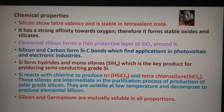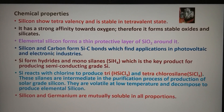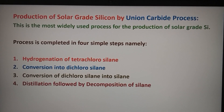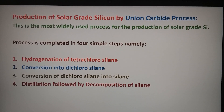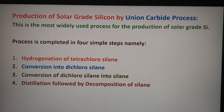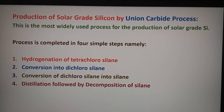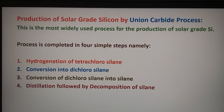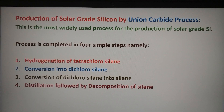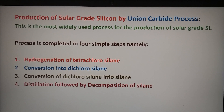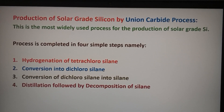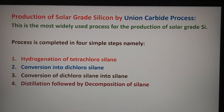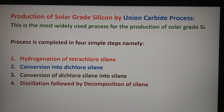There are many processes for the production of solar-grade silicon, but the most widely accepted process is the Union Carbide process. We will discuss the Union Carbide process of production of solar-grade silicon in detail. It has four simple steps: first is hydrogenation of tetrachlorosilane; second is conversion to dichlorosilane; third is the conversion of dichlorosilane into silane; and fourth is the distillation of silane followed by decomposition of silane into solar-grade silicon.